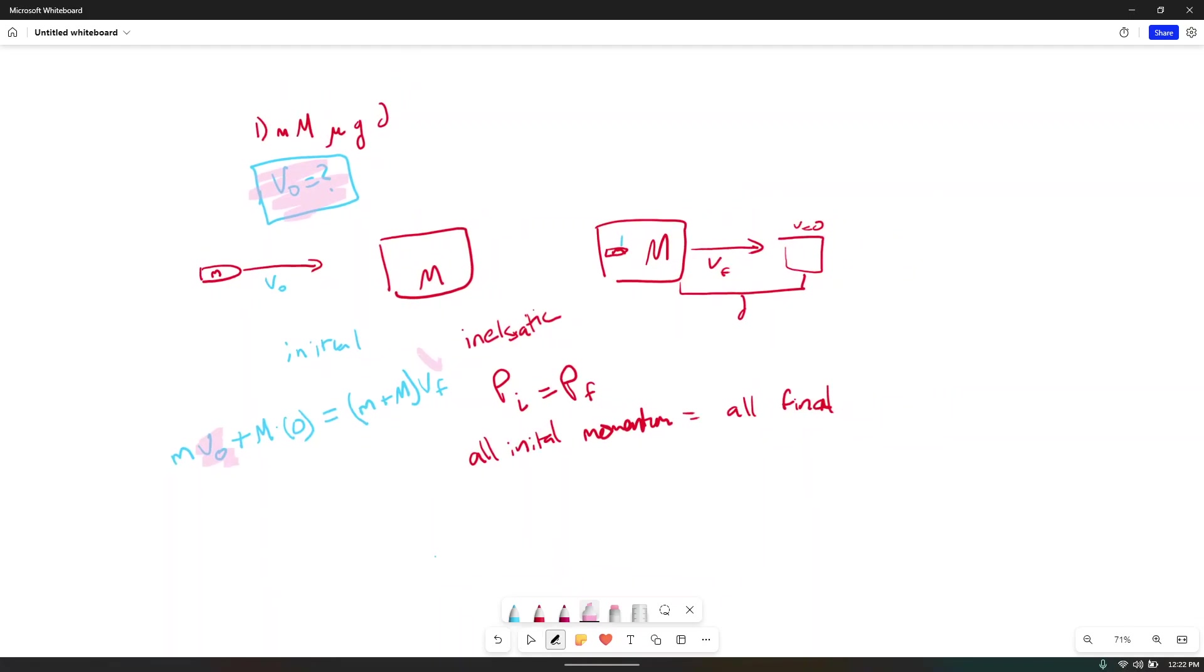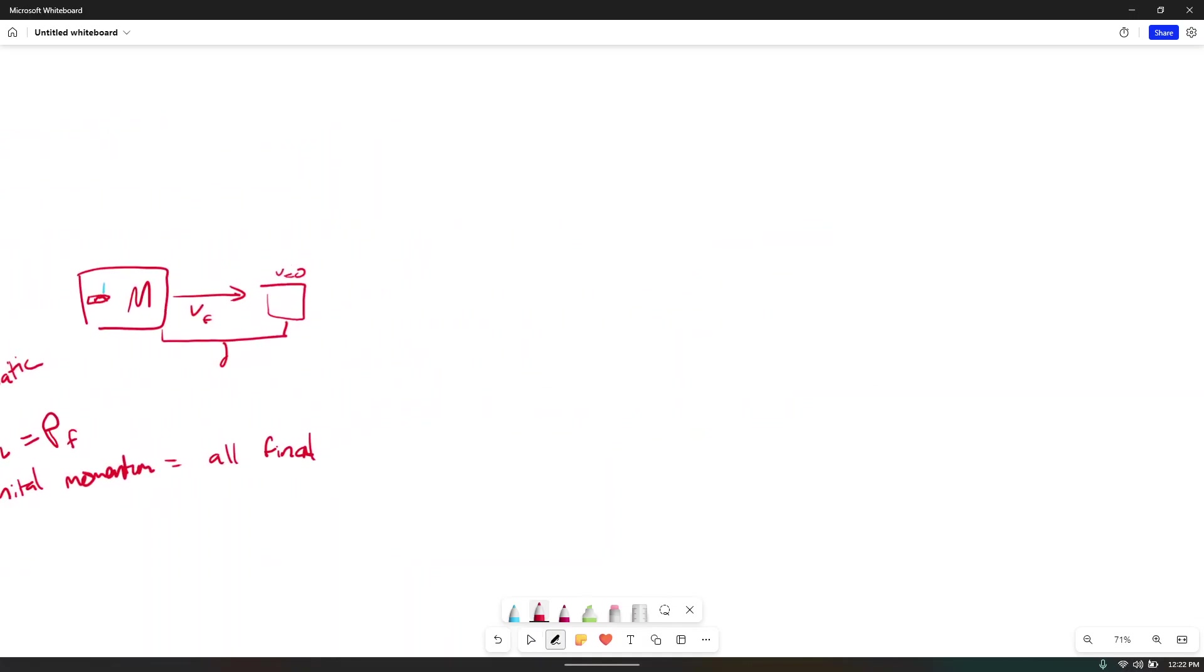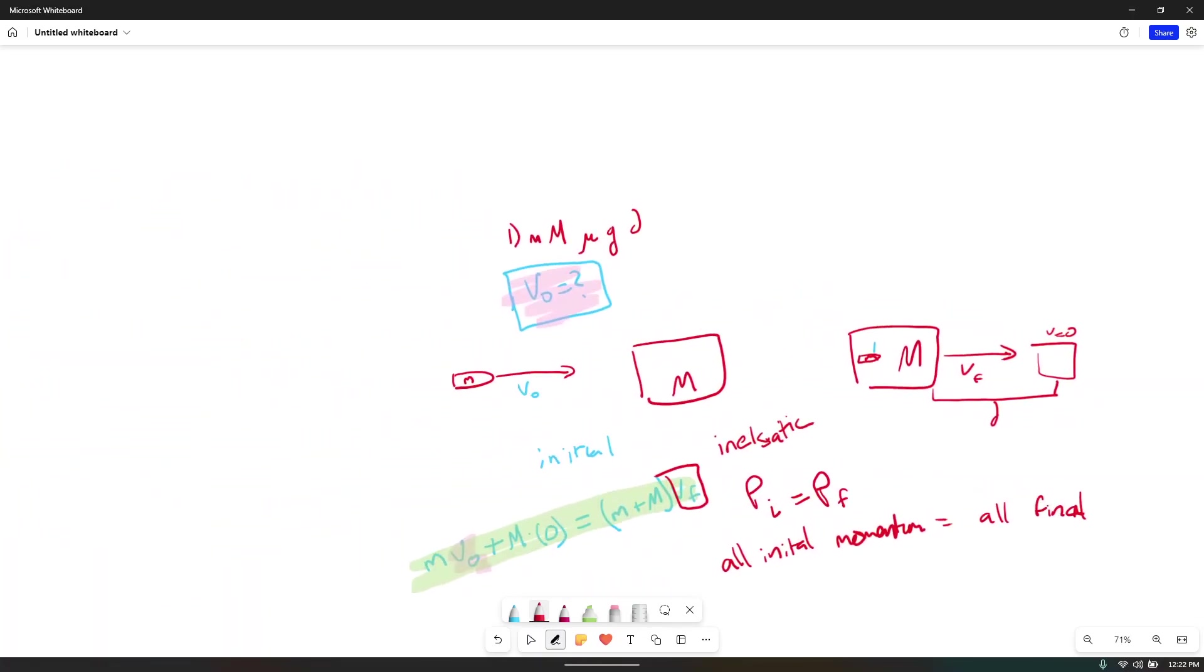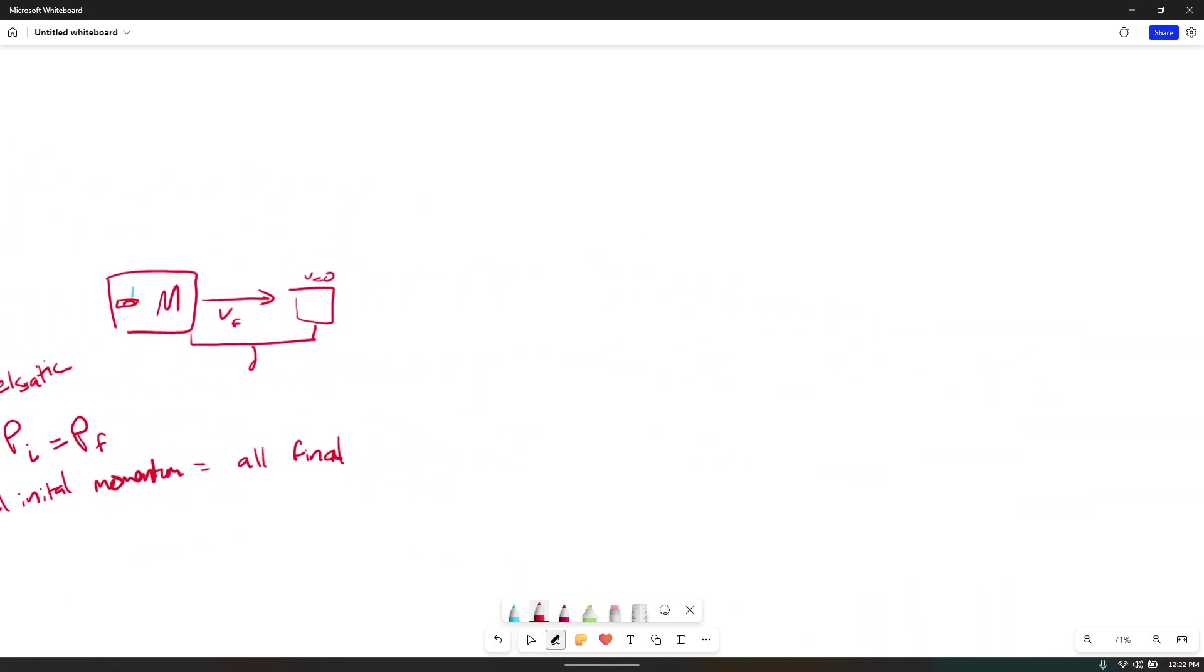So this is the conservation of momentum. We are trying to find this V0 over here. That is our question mark. Do we have mass? Yes. Do we have this? This term cancels out because it's m times zero. Do we have velocity final? No, we don't have velocity final. But given the parameters of the final state, we can calculate what that velocity final is. Now, it's going to be a little bit confusing, so I need you to stick with me here.